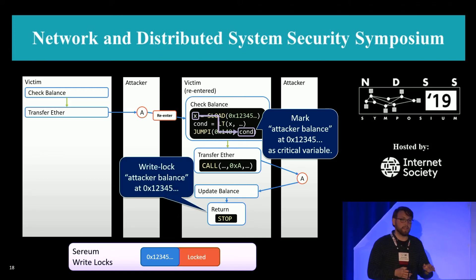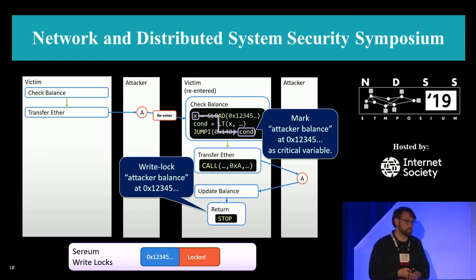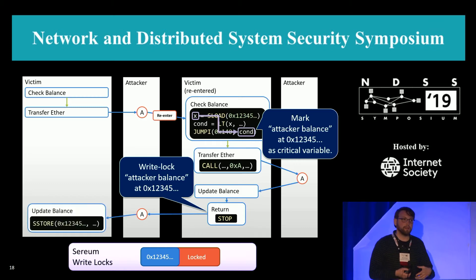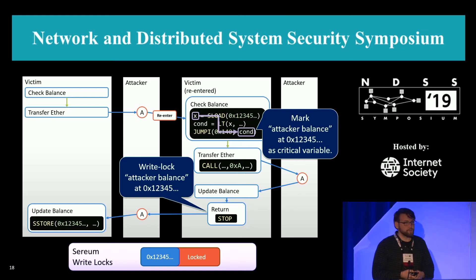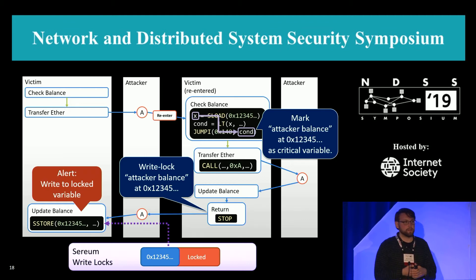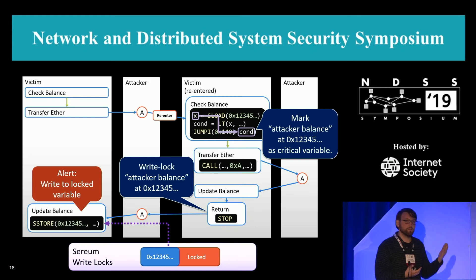Only on the return do we say: all critical variables from this invocation — in this case the attacker balance at 0x12345 — will be locked from now on. Then we return to the attacker again, and the attacker re-enters the victim. Now the second time update balance is executed, which is typically a store instruction, and it writes to address 0x12345. Serium will note that and say this is a write to a locked variable, so we raise an alert — because if we would allow this write, there would be an inconsistency in the state between the first invocation and the re-entered invocation, and this is what we want to avoid.